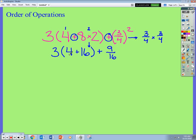Inside the parenthesis, I have 4 plus 16. 4 plus 16 gives me 20. So now I have 3 times 20 plus 9 sixteenths.